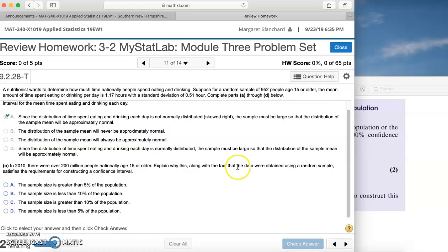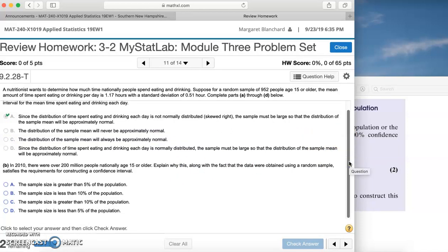Fantastic. All right, in Part B: In 2010, there were over 200 million people nationally aged 15 or older. Explain why this, along with the fact that the data were obtained using a random sample, satisfies the requirements for constructing a confidence interval.